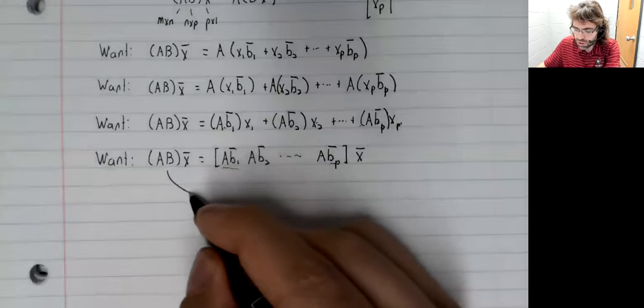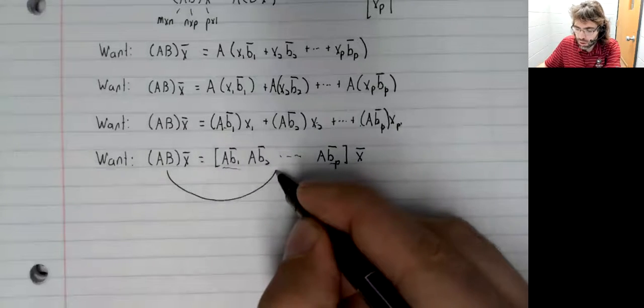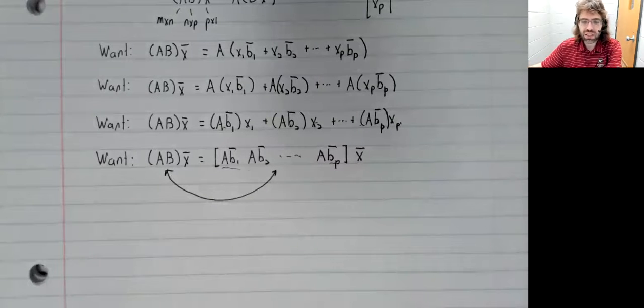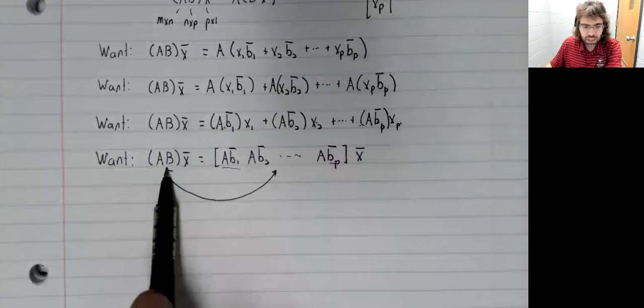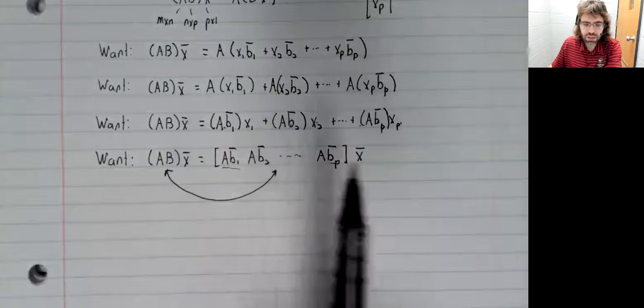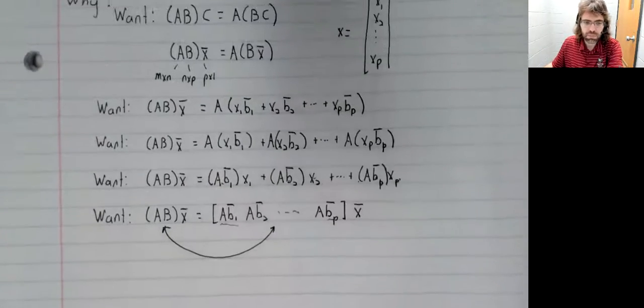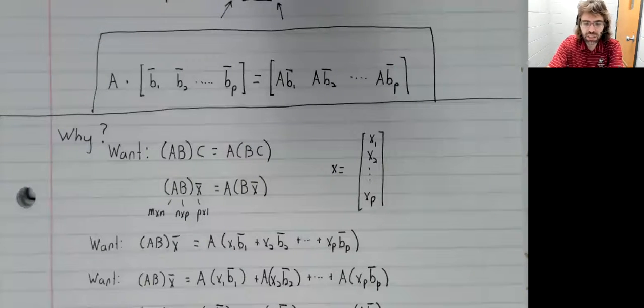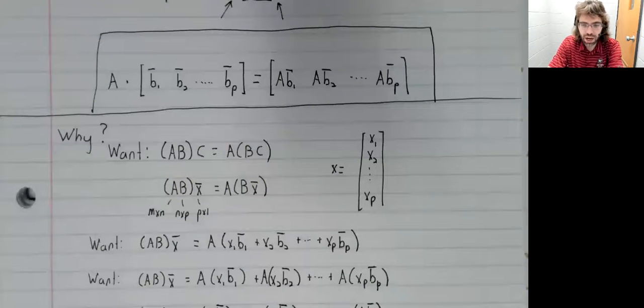And how can we make sure that this matrix times X equals this matrix times X? Well, the easiest way to make sure of that would be if these matrices were the same. If A times B equaled this matrix, and that is precisely how we define A times B.